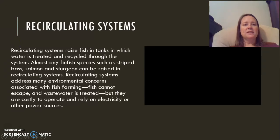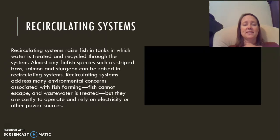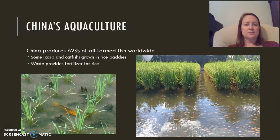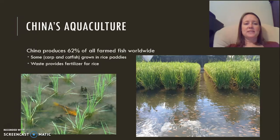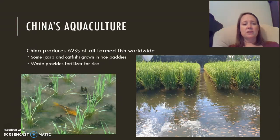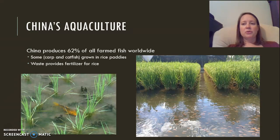Recirculating systems raise fish in tanks until they are harvested. Fish cannot escape, but it is very expensive and relies on electricity or other power systems. One sustainable method is used in China, which produces 62% of all farmed fish worldwide. They raise carp and catfish in rice paddies — waste from the fish provides fertilizer for the rice, making it a sustainable integrated system.